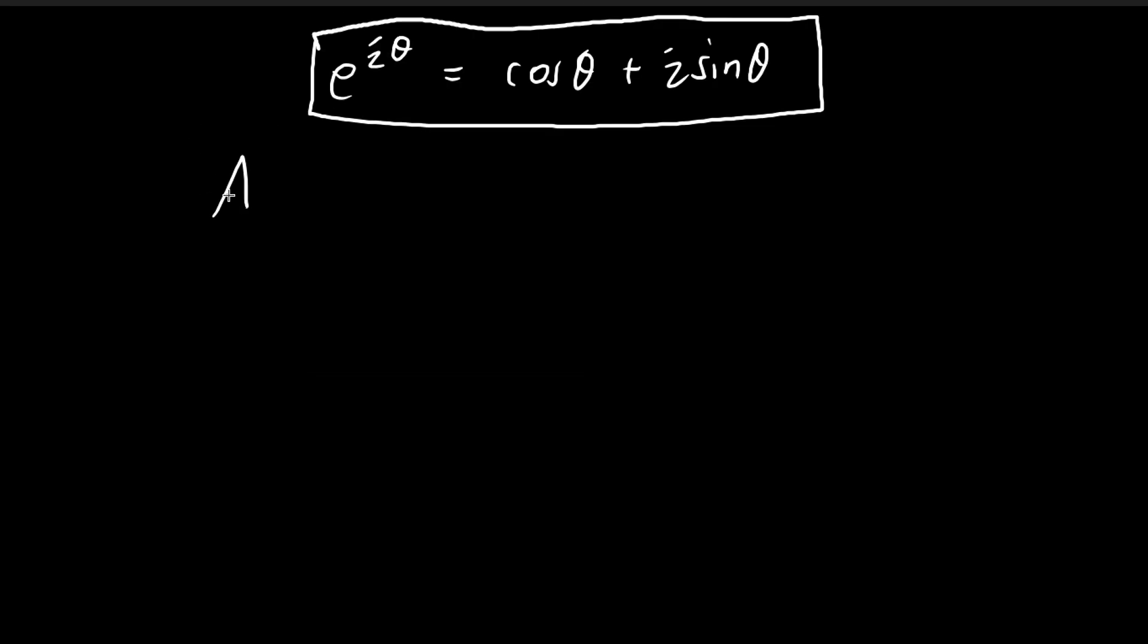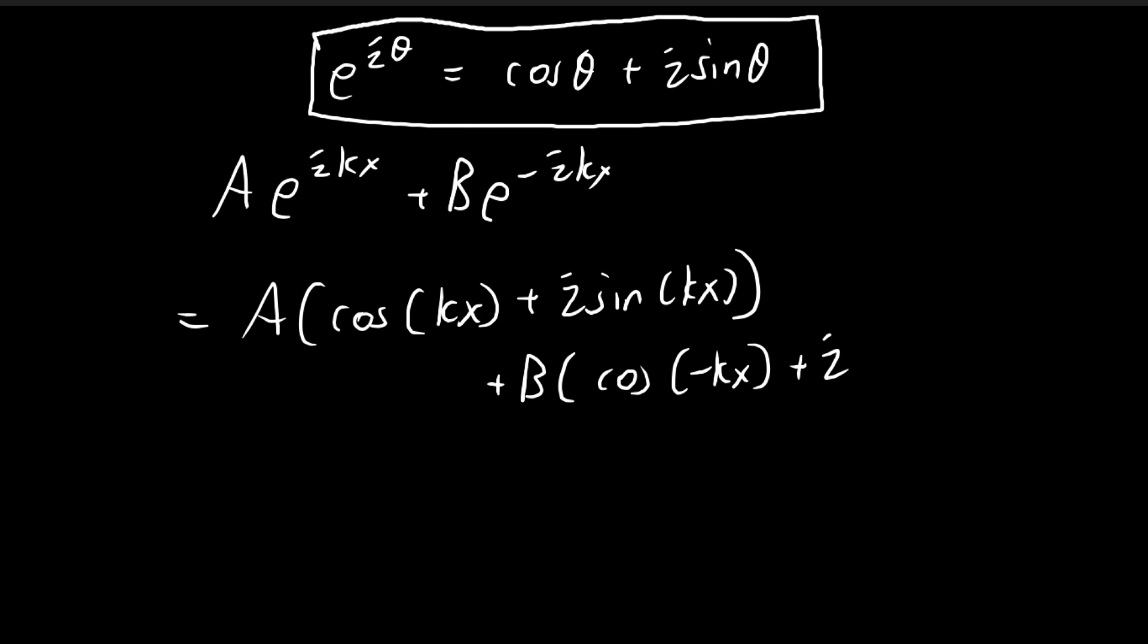Going back to the problem, we want to express this expression over here in such a way that it is a sum of a cosine term plus a sine term. So we can do this by applying Euler's formula. This term here becomes cosine kx plus i sine kx, and then this term over here becomes cosine negative kx plus i sine negative kx.